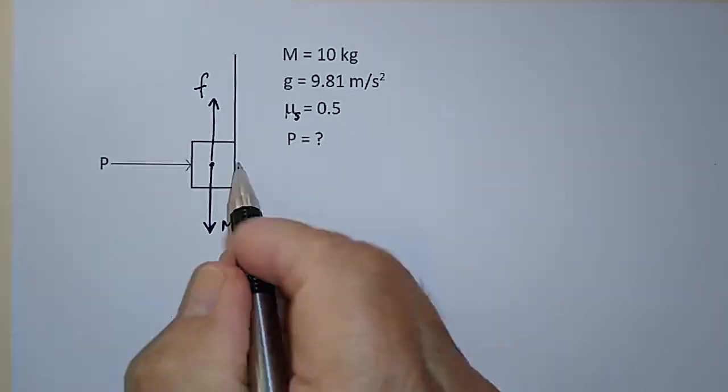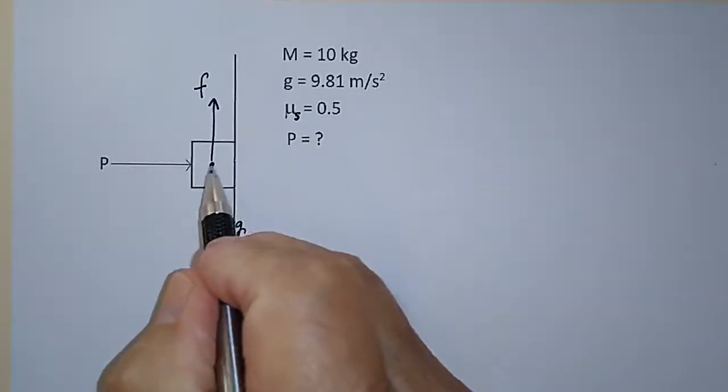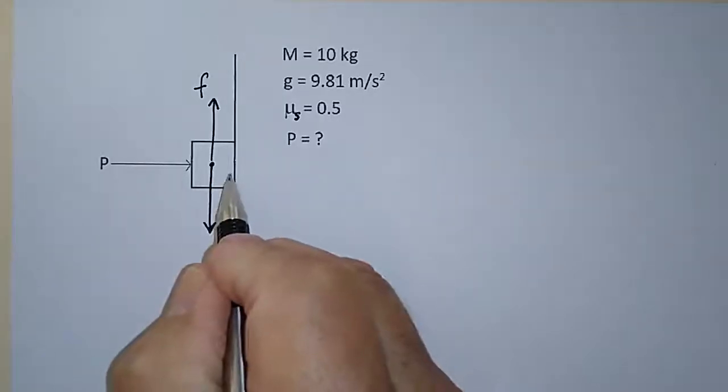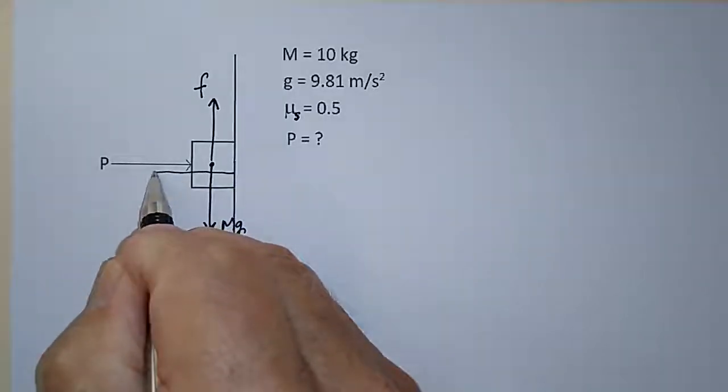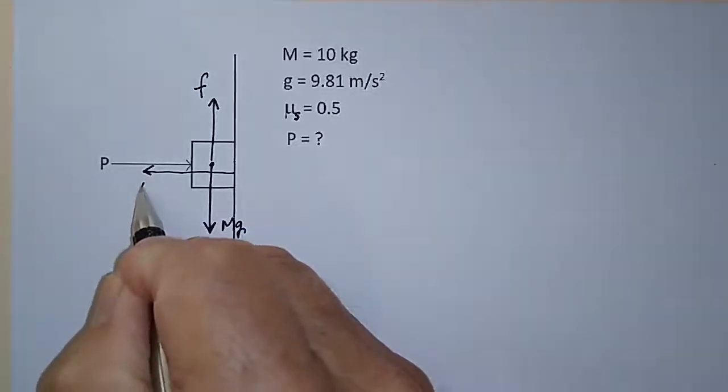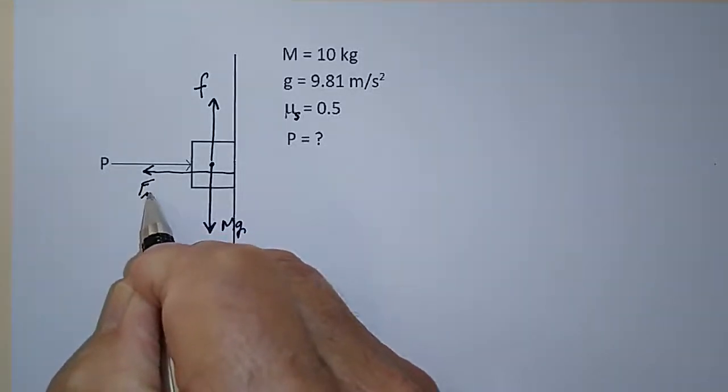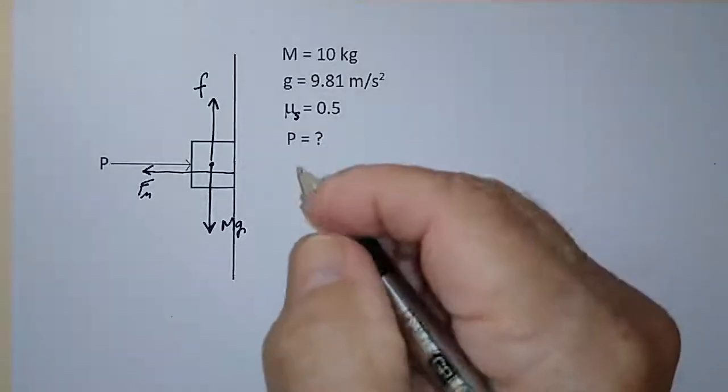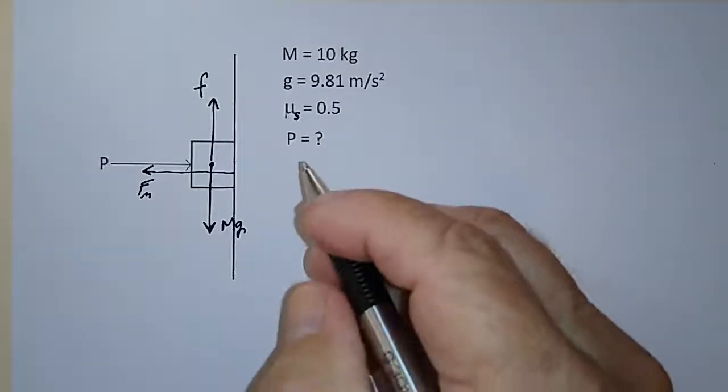Now the force that the wall exerts on the box has to be equal and opposite to this, so I'll draw it like this about the same length. This is the normal force, but the magnitude of it has to be equal to the push force.